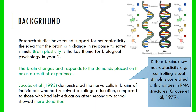The brain structure you have could be different in terms of the structures present, their volume, the pathways, or the neurons within your brain, based on the experiences you've had. There's a study by Jacobs who looked at individuals who had received a college education compared to those who left education after secondary school. Those with more extensive further and higher education had neurons showing more dendrites.